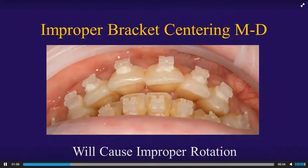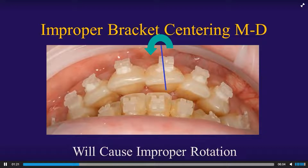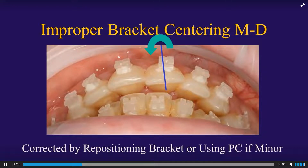What if your bracket is off-center? That will cause improper tooth rotation. This bracket is off-center to the distal, so it's going to cause improper mesial rotation — it's not quite centered. So what you want to do is remove and reposition that bracket to the proper mesial-distal centering.